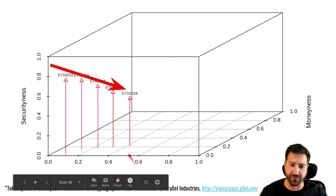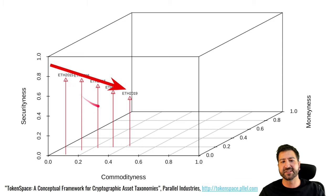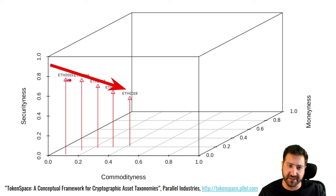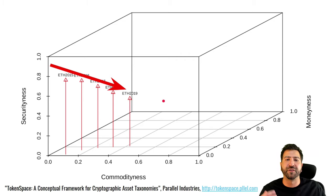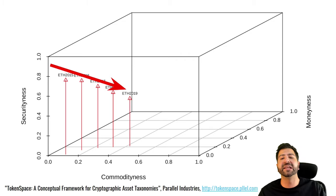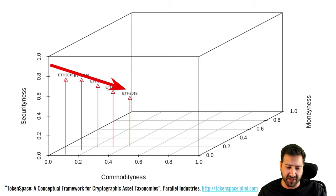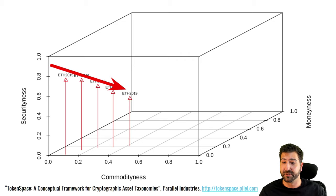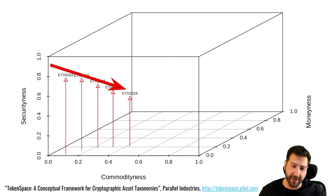Ethereum is interesting: it started off looking very security-like, with very high security-ness. As time's gone on and the network has proliferated, it's become used and useful — a kind of digital commodity, like digital oil used to run smart contracts. At the very least, Ethereum is a reasonable substrate for experimentation: a petri dish or laboratory, maybe a place for toy solutions to toy or real problems, though perhaps not for real solutions to real problems.